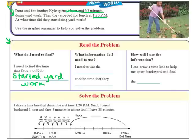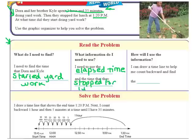What information do I need to use? I need to use the elapsed time. Remember, I said elapsed time is how much time they spent doing something. So in this problem, it will be 1 hour and 35 minutes. And I also need to use the time that they stopped for lunch, which in this problem is 1:20 PM. How will I use the information? Well, to start off with, I'm going to draw a timeline to help me count backwards and find the start time.